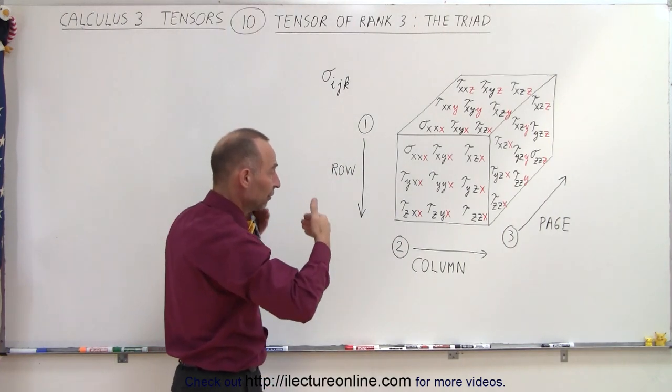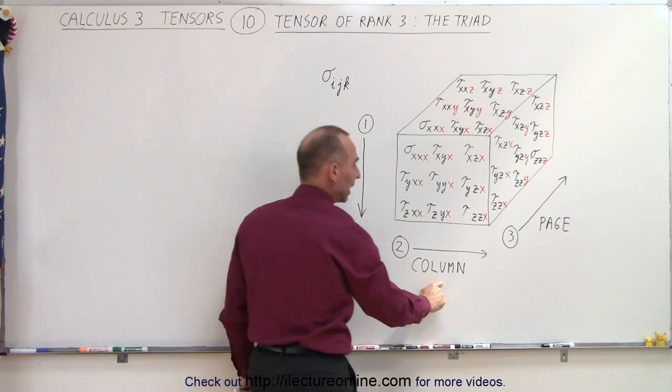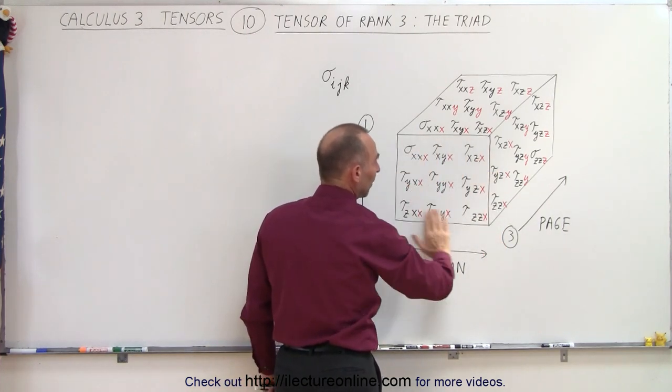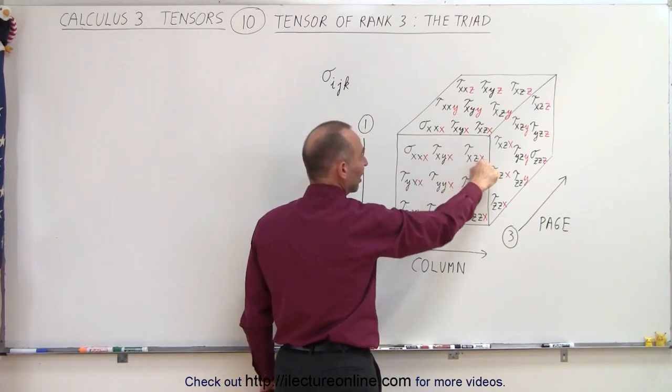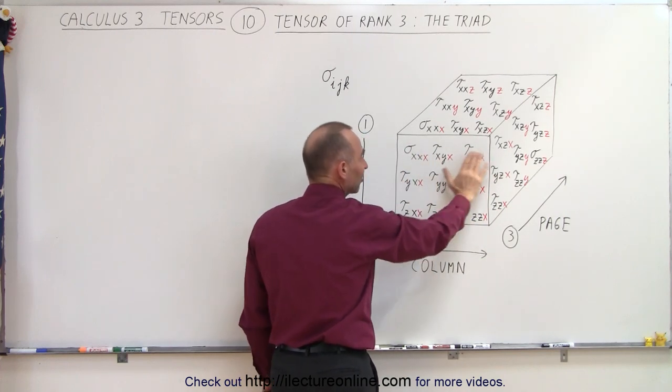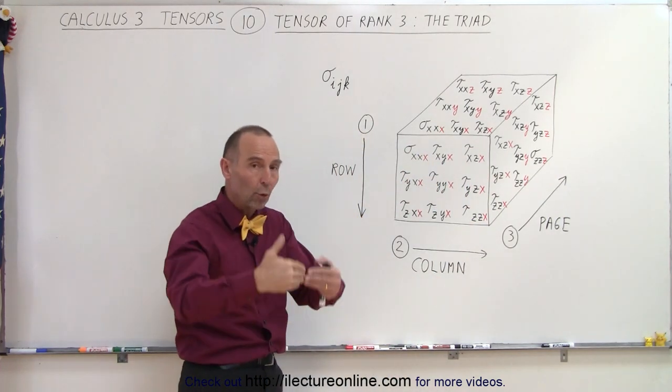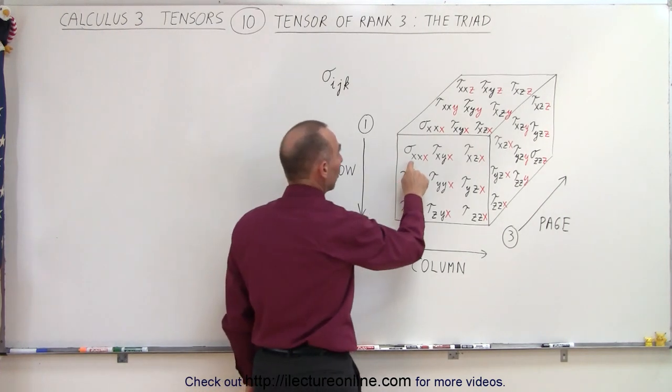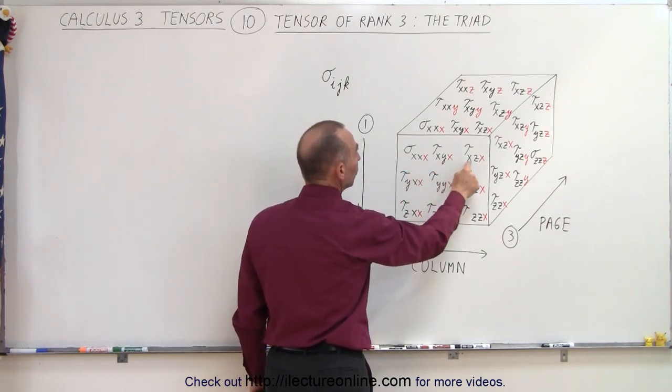And then when we go from the front to the back, the three pages, the first page represents, that would be represented by the third subscript. So in this case, all of the third subscripts of this first page have the exact same indicator: X or 1. So we would have 1, 1, 1, 1, 2, 1, 1, 3, 1.